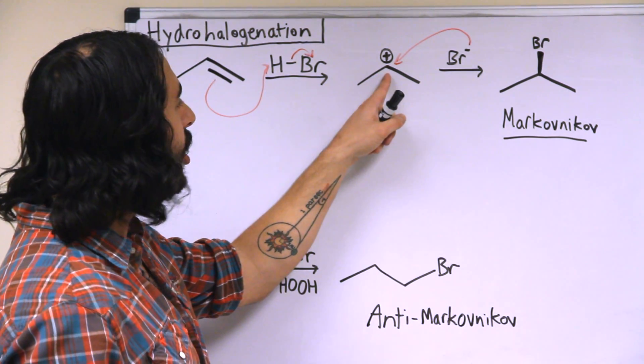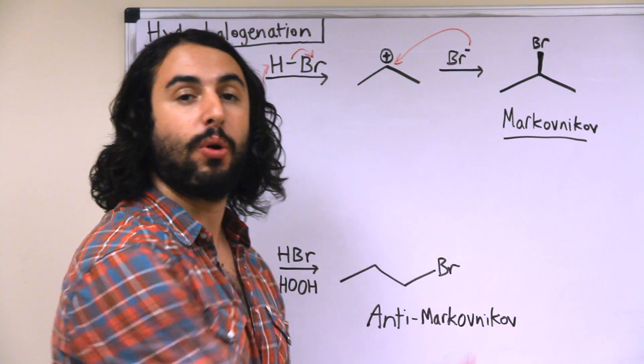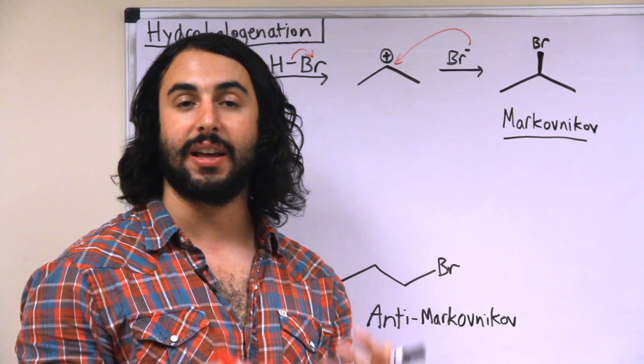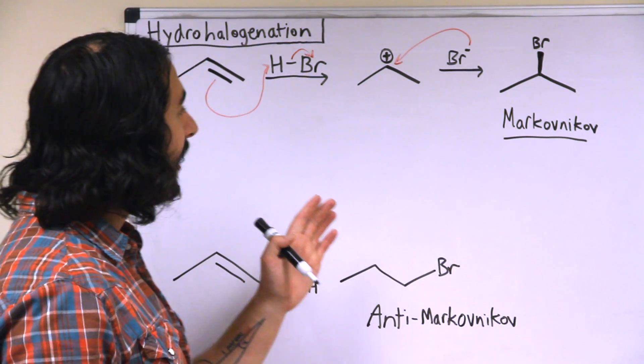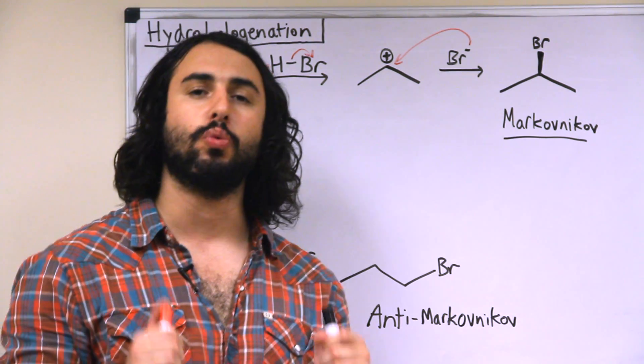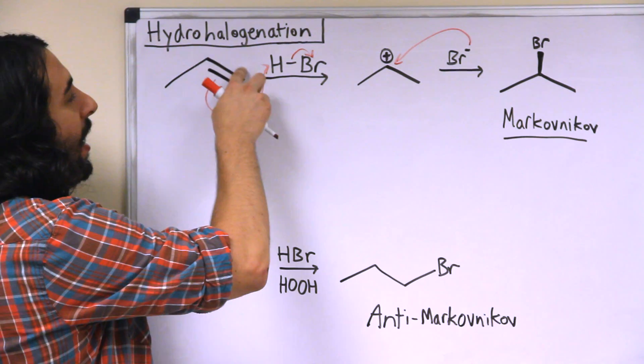Remember that this is basically like an SN1 reaction at the end of it. Here we have a carbocation and then that bromide, that incoming nucleophile, can approach from either side. And if we were generating a chiral product we would get a racemic mixture.